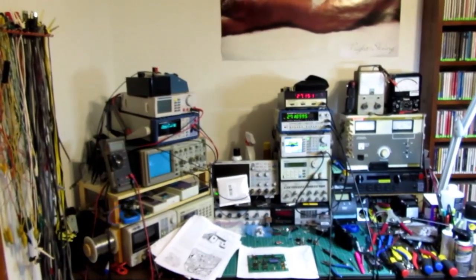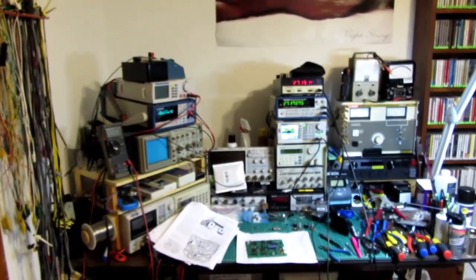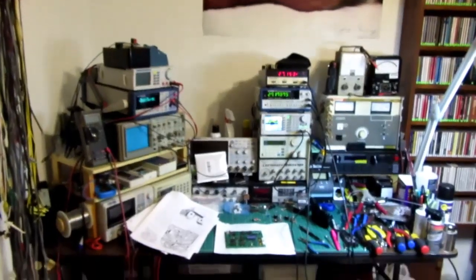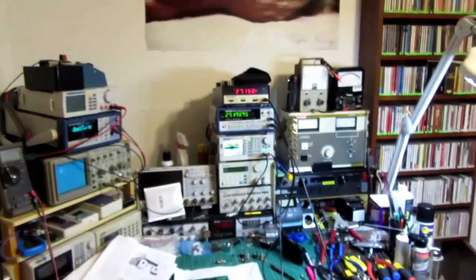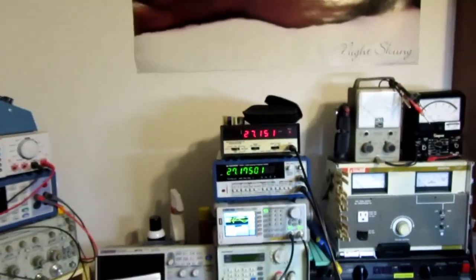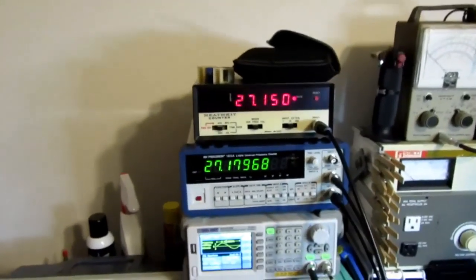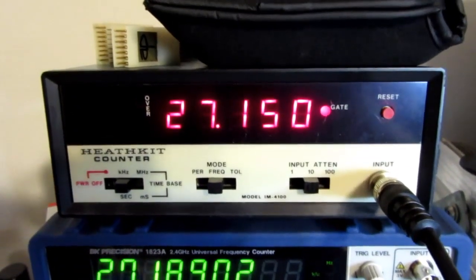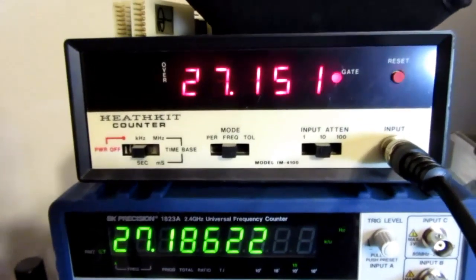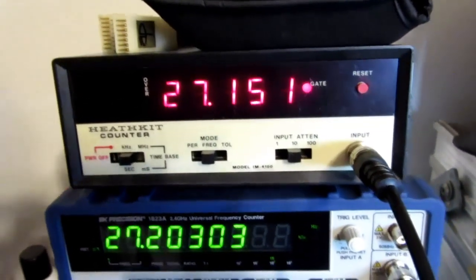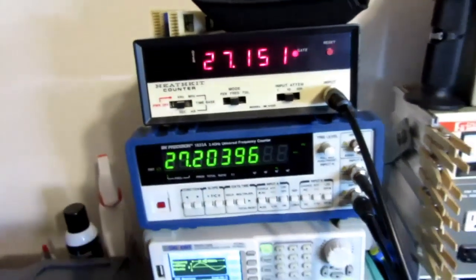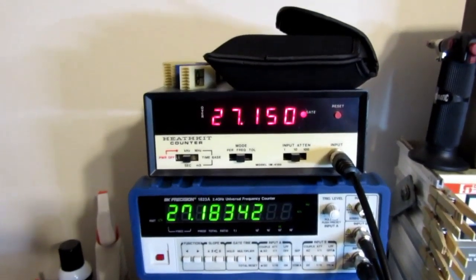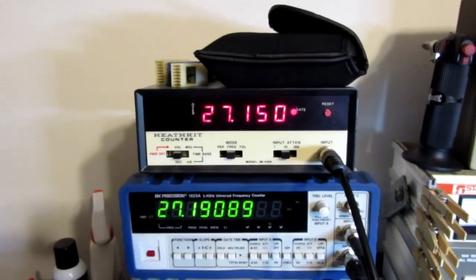The new one here is my Christmas present to myself if you will, and that is to supplement and or replace in some way my one remaining Heathkit piece of equipment, my frequency counter which is a model IM 4100. I don't use it a lot and I really wanted to be able to get into a higher frequency range for a couple projects I'm working on, higher than this can handle.